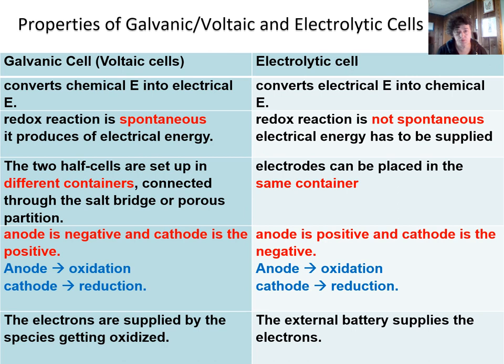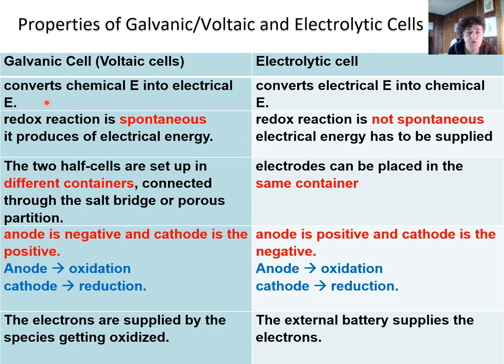Let's go over the properties of galvanic (also called voltaic) cells and electrolytic cells—what's different and what's the same. One important difference is the type of reaction. For galvanic/voltaic cells the reaction is spontaneous and can produce electricity: chemical energy converts to electric energy. For electrolytic cells, the reaction is non-spontaneous and happens only if we provide energy; electric energy from the plug is used to produce chemical energy.